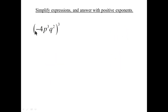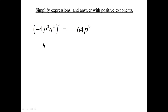Cubing something: because it's multiplied the rule applies. A negative times a negative times a negative is a negative; four times four times four is 64. P to the three to the three — in that configuration, multiply the exponents. It can be that simple.